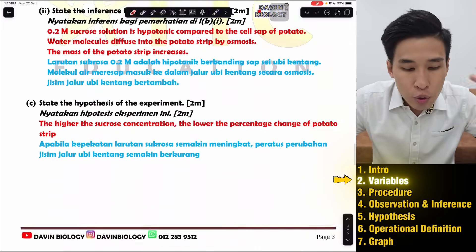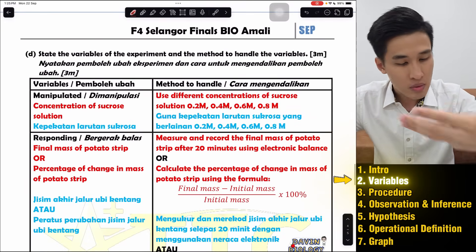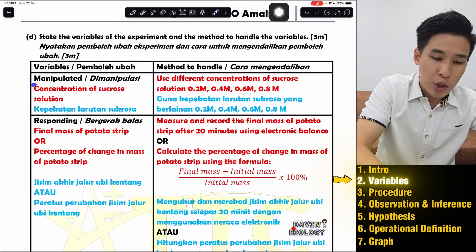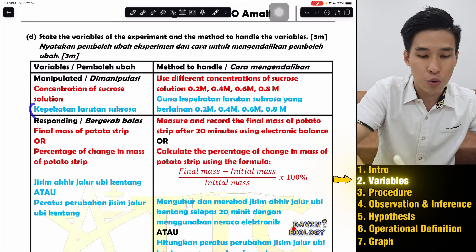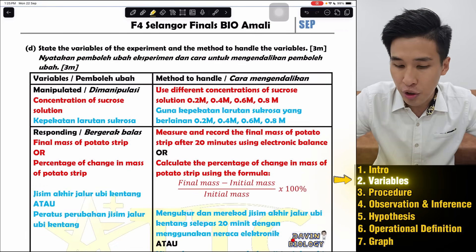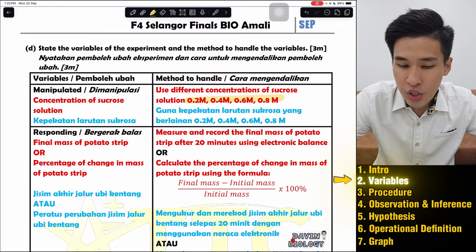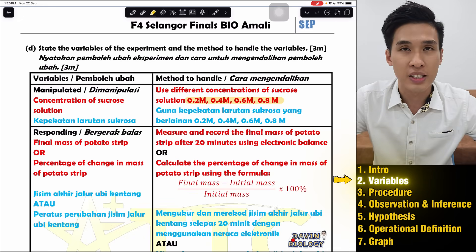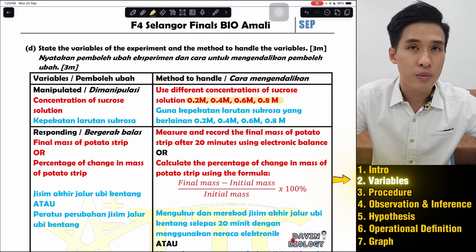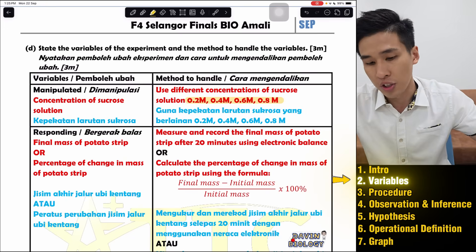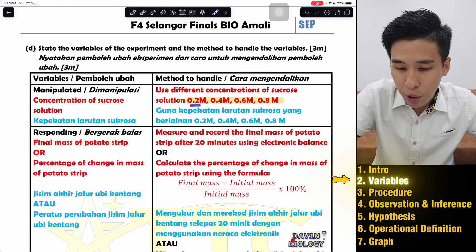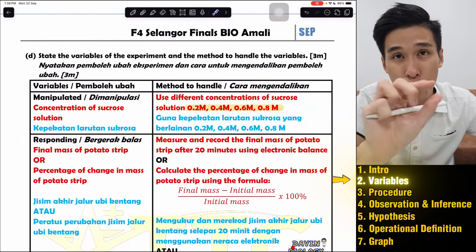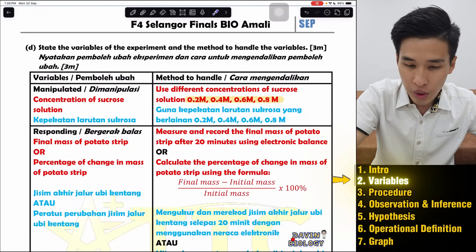So first you must know the variables of the experiment. The manipulated variable is concentration of sucrose — kepekatan larutan sucrose. When you write your procedure, you must include all the values of your MV. So since concentration of sucrose is my MV, I must list down all the concentrations: 0.2, 0.4, 0.6, 0.8 — depending on what values the question gives you. So read your question; it might not always be the same.